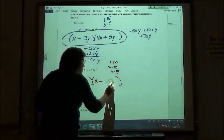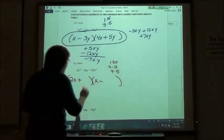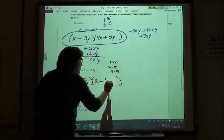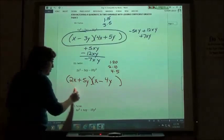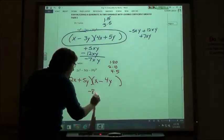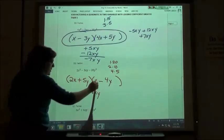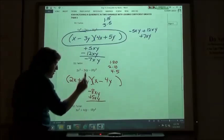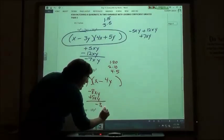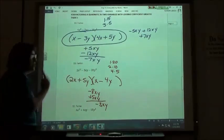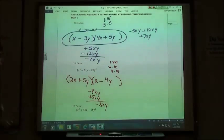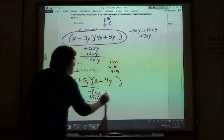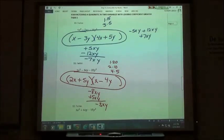I'm going to put my 5y first and then my 4y, 5y and 4y. So my outside product is negative 8xy. My inside product is positive 5xy. Negative 8 plus 5 is negative 3xy. Sure enough, negative 3xy is what we want. So 2x plus 5y times x minus 4y is going to end up being your answer.